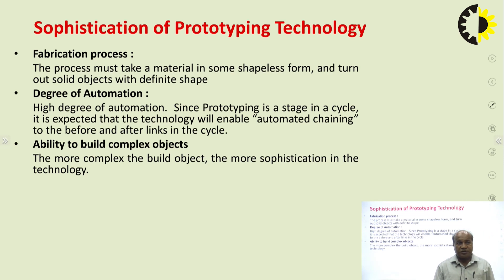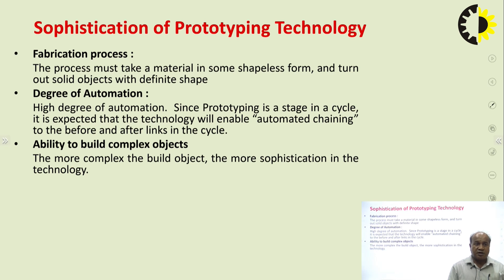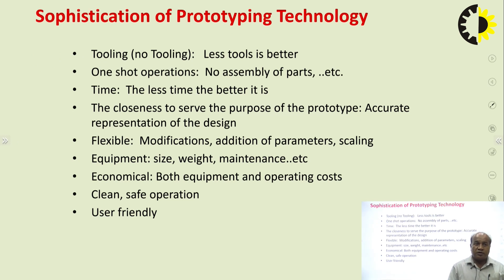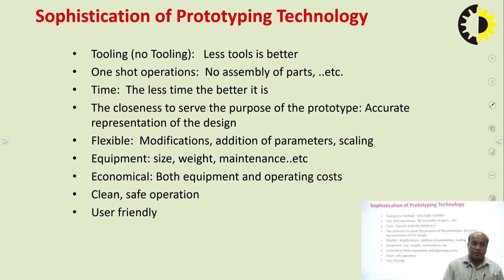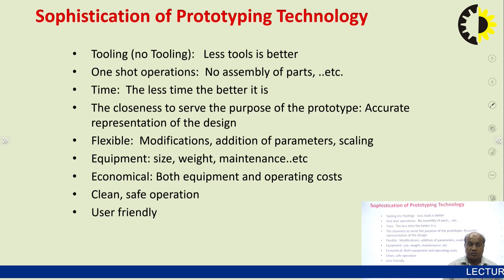On the basis of sophistication, we can differentiate this technology as a fabrication process. The process must take a material in some shapeless form and turn it into a solid object with a definite shape. On the basis of degree of perturbation — since prototyping is a stage in a cycle — it is expected that the technology will enable automated churning to the before and after links in the cycle. Ability to build complex objects: the more complex the object, the more sophistication in the technology required. Tooling and no-tooling: less tooling is better. One-shot operation with no assembly of parts required. The less time the better. The closeness to serve the purpose of the prototype, accurate representation of the design; it must be flexible — modification, addition of parameters, scaling, equipment size, weight, maintenance — economical both in equipment and operating cost. These are the requirements of this prototyping technology.